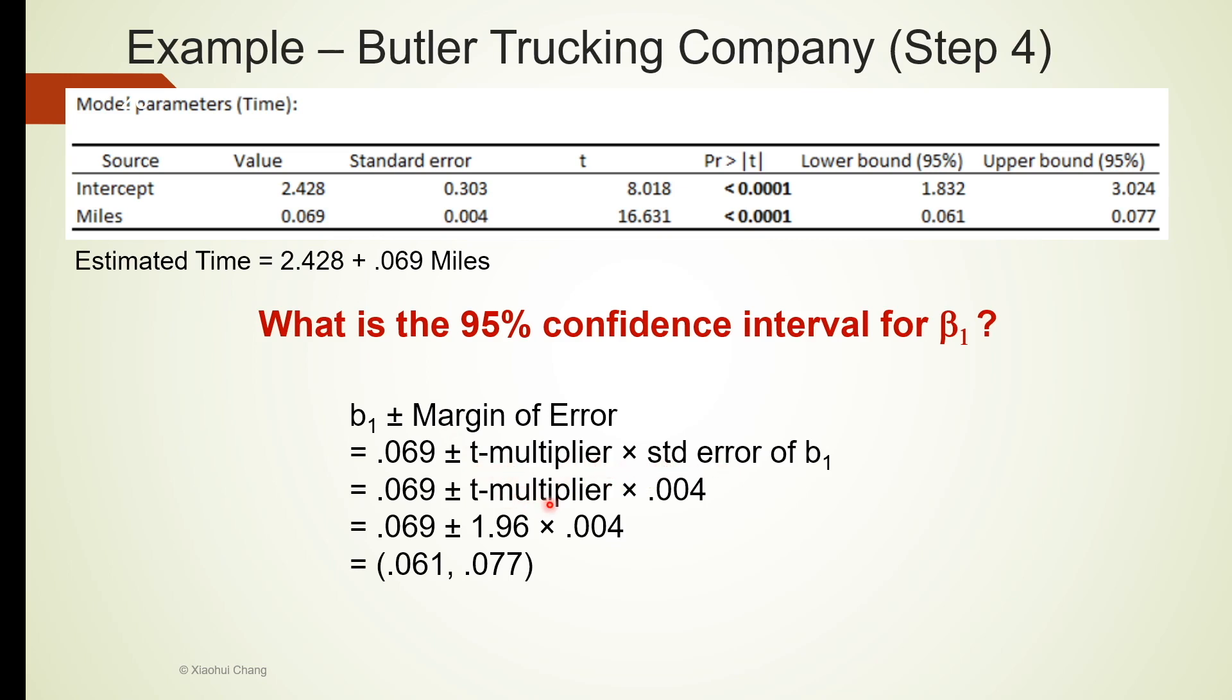The t multiplier can be found using Excel t.inv function, and the standard error is usually given in the table as you can see here. Make sure you use the standard error for the slope coefficient, not the standard error for the intercept. After we plug all the numbers into our formula, we obtained 0.061 and 0.077 as the confidence interval. These numbers are the same as the ones given in the table as you can see here. Many software, including Excel stat, provides the lower and upper bound of the confidence intervals. So we don't have to do these calculations manually. That's pretty convenient.